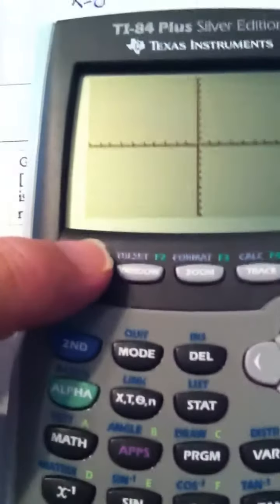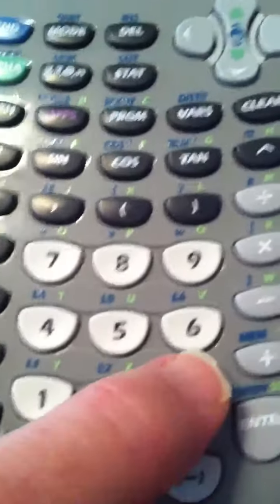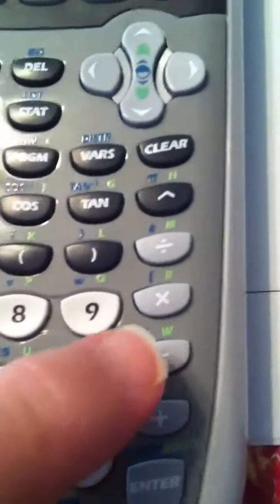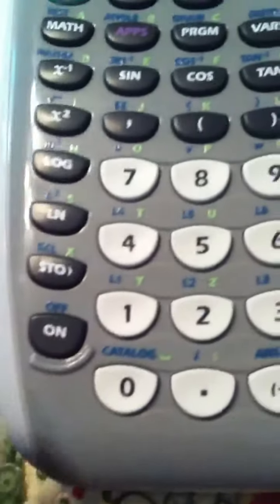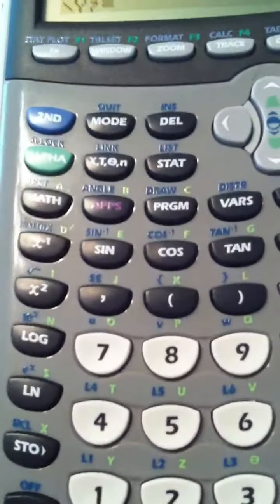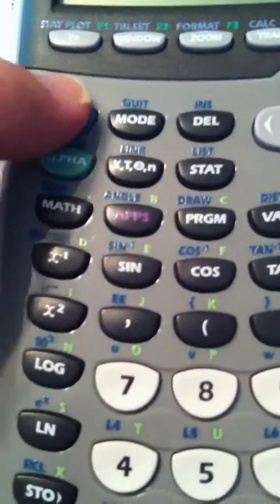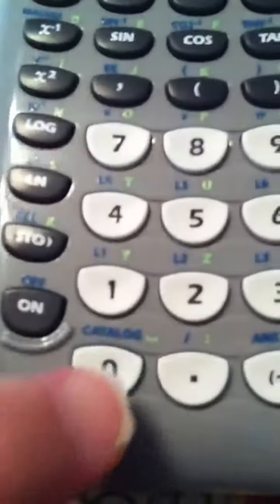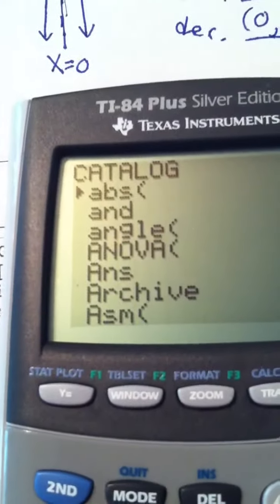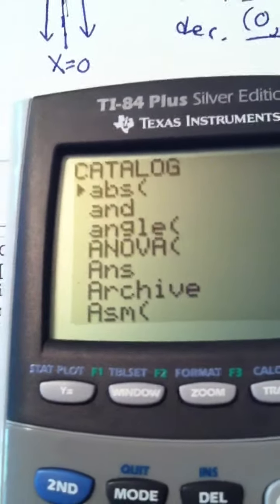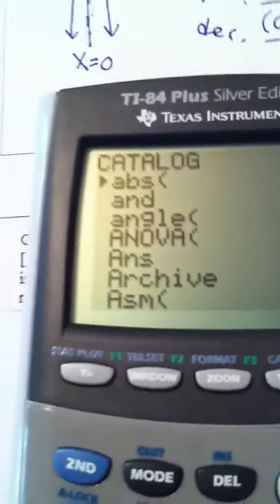I hit y equals 3 minus, and absolute value is in a couple places. You can find it in the math menu, but I teach my students to find it in catalog. So I hit second function, catalog, and notice the very first option in catalog is abs with a paren. That stands for the absolute value function.